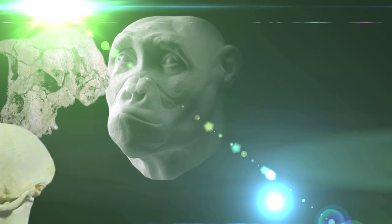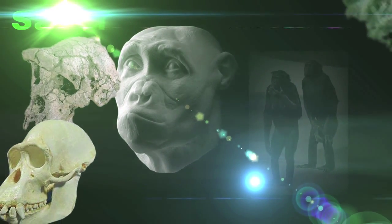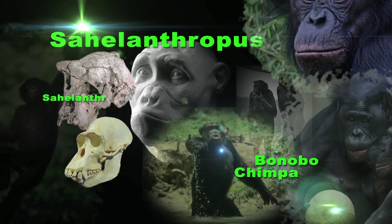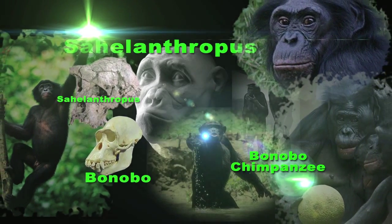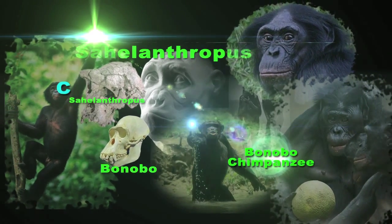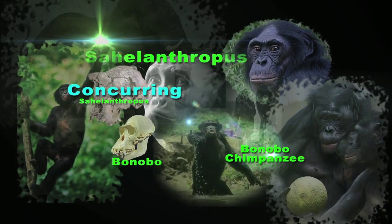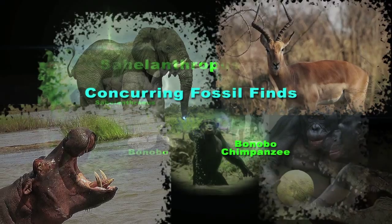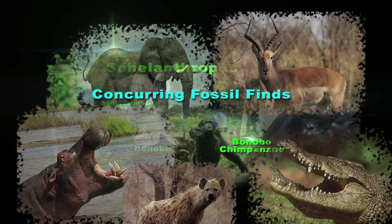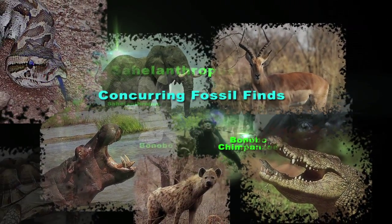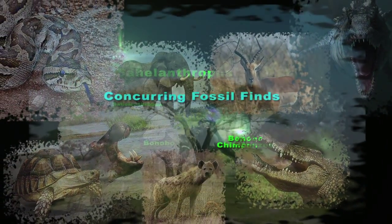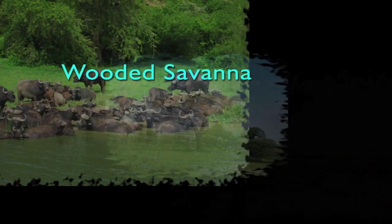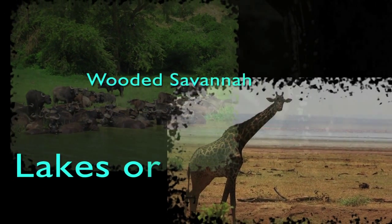The current view of Sahelanthropus is that it probably walked upright, had the brain size of a chimpanzee, and was probably about the same size as a chimpanzee. Fossils of other creatures found in the same strata include elephants, antelopes, hippos, crocodiles, hyenas, snakes, turtles, and fish. This leads paleoanthropologists to believe Sahelanthropus lived in an area of wooded savanna with lakes or rivers present.